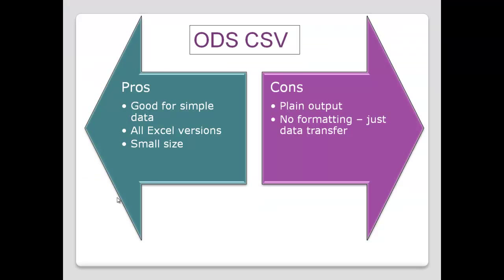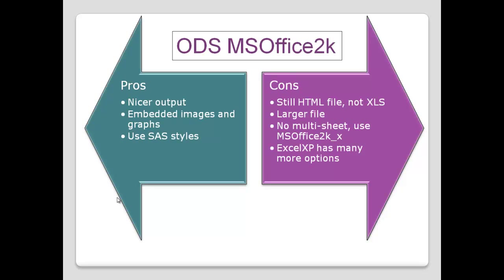Advantages and disadvantages. The ODS CSV file format is good for simple data and works with all Excel versions — some of the other techniques don't work with earlier Excel versions. Another advantage is its small size: CSV is the smallest file format created, because it's purely the data being written out without any formatting. The downside is it's just plain output — not nicely formatted at all, just simple data moving across into the Excel spreadsheet. We don't even discuss the pros and cons of ODS HTML output, because we say do not use that.